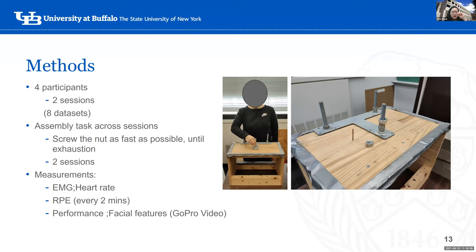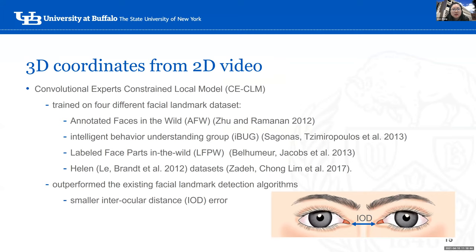My method originally requires 16 participants, but currently I have finished four for a pilot study. All participants finish two sessions. The assembly task involves screwing a nut over a bolt as fast and as many times as possible until exhaustion. Measurements include EMG for muscle activity, heart rate, Rating of Perceived Exertion, performance, and facial features captured through a GoPro camera in front of the face. Data processing outputs 3D coordinates from 2D video using a Convolutional Expert Constrained Local Model — the best model trained by multiple databases that outperforms existing facial landmark detection algorithms with smaller interocular distance error.